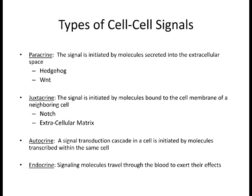Juxtacrine is where the inducing ligand is actually bound to the membrane of the cell, restricting its ability to only induce adjacent tissue—it doesn't secrete the protein; it's a membrane protein. Juxtacrine involves just cell-cell contact. The prime example we're going to go through is Notch signaling. Autocrine is when the cell secretes a signal and induces itself—secreting it in a paracrine fashion but inducing its own cells.